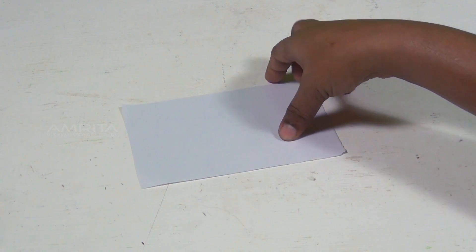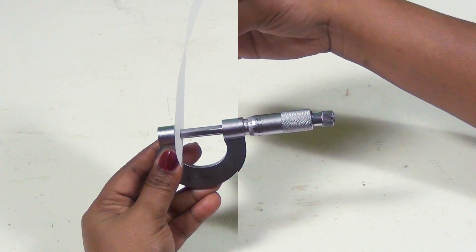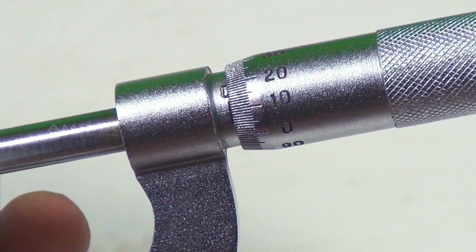For finding the thickness of a sheet of paper, grip it between the stud and screw of the screw gauge and note the readings.